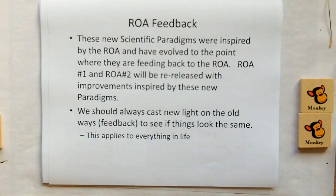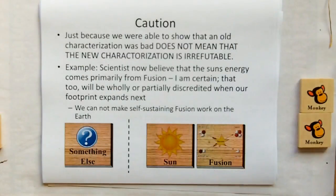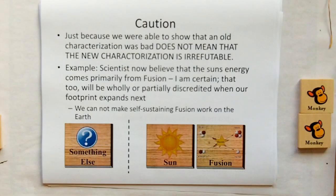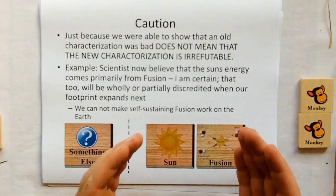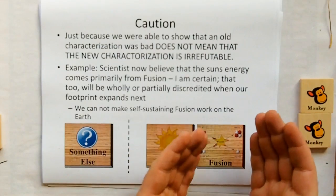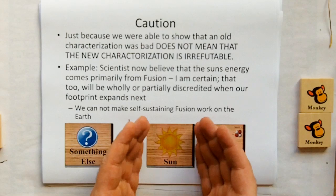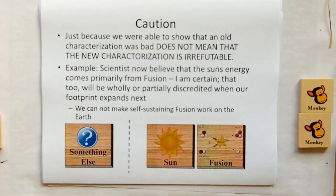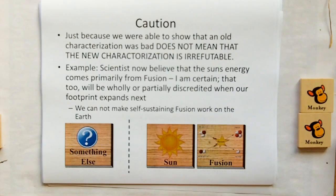We should always cast new light on the old ways to see if things look the same. But here's a caution: just because we're able to show that an old characterization was bad does not mean the new characterization is irrefutable. Scientists now believe that the sun's energy comes primarily from fusion. Again, if the most powerful thing we know that generates light and heat is nuclear power, of course we're going to deem the sun as nuclear power. We don't know — there may be something else, and this too will likely be wholly or partially discredited when our footprint expands.